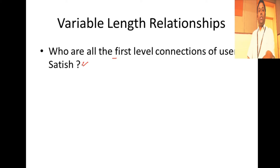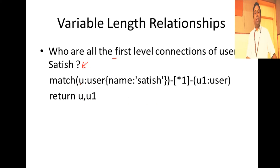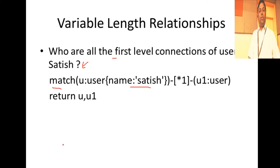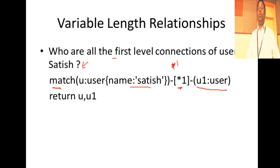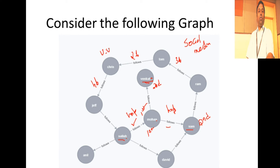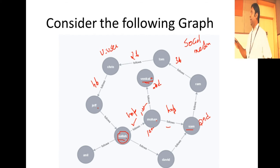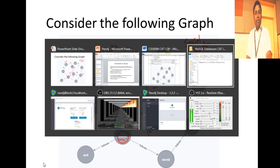First query: who are all the first level connections of user Satish? We write: MATCH (u:User {name: 'Satish'})-[*1]-(u1:User) RETURN u, u1. Every node here is a User node. We go to the user Satish, find all first level connections irrespective of direction — so whether Satish follows somebody or someone follows Satish. We're using star one for fixed length, meaning only first level connections.